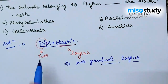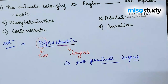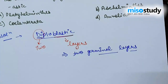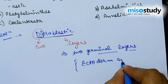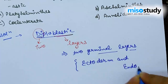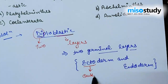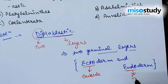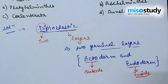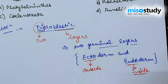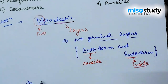If it is triploblastic, 'tri' means three — so triploblastic means three germinal layers. In diploblastic organisms, the two germinal layers are ectoderm — where 'ecto' means outside — and endoderm, where 'endo' means inside. Now, out of the four phylums, we need to find which phylum shows diploblastic layers.